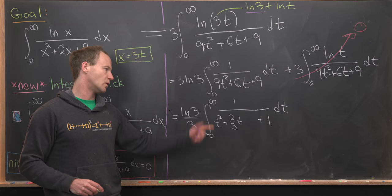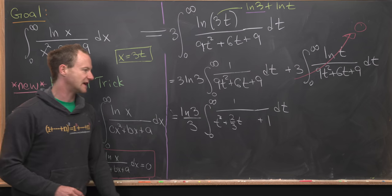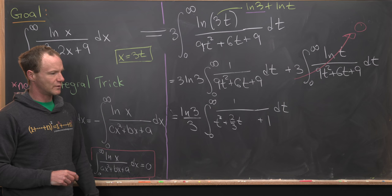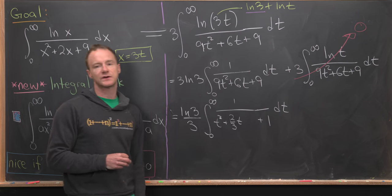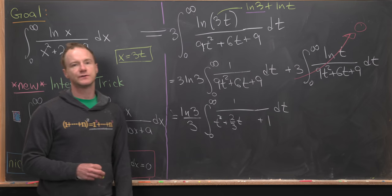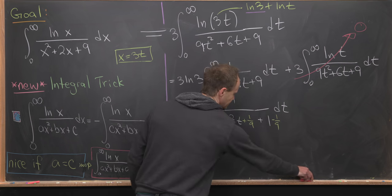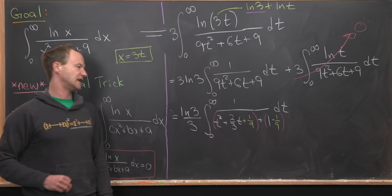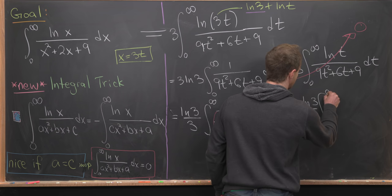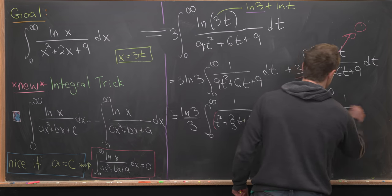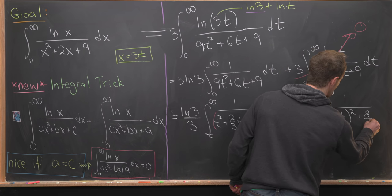We complete the square in the denominator: half of 2/3 is 1/3, squared is 1/9, so we add and subtract 1/9. This gives t²+ 2/3·t + 1 = (t + 1/3)² + 8/9. The integral becomes ln(3)/3 times the integral from 0 to infinity of 1 over [(t+1/3)² + 8/9] dt.